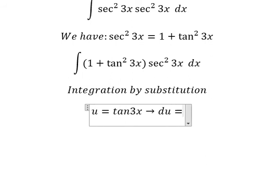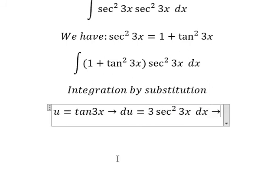We have 3 secant of 3x squared dx. Because we don't have the number 3, we need to divide both sides by 3.